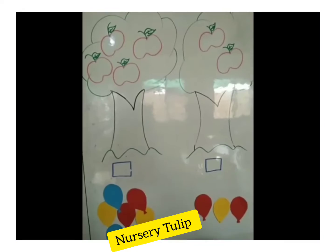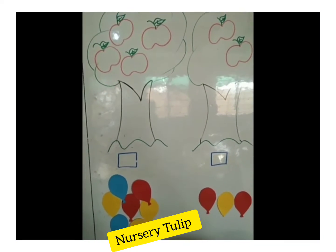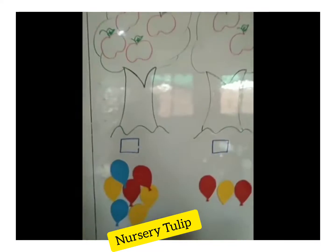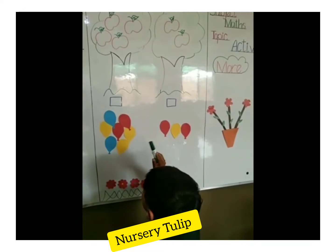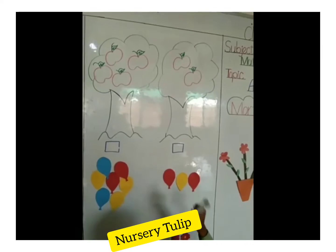Count the apples and pick the one which has more apples and cross the less one. One, two, three, four. One, two.